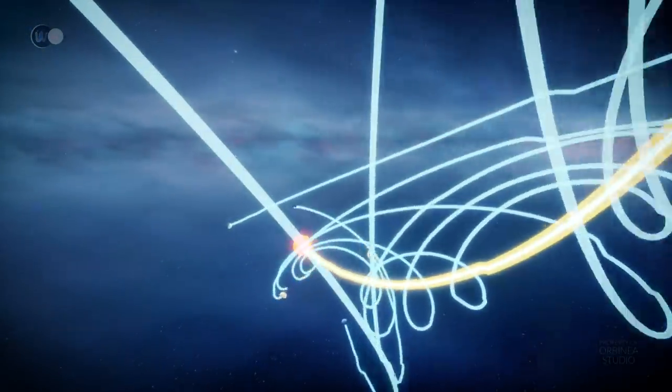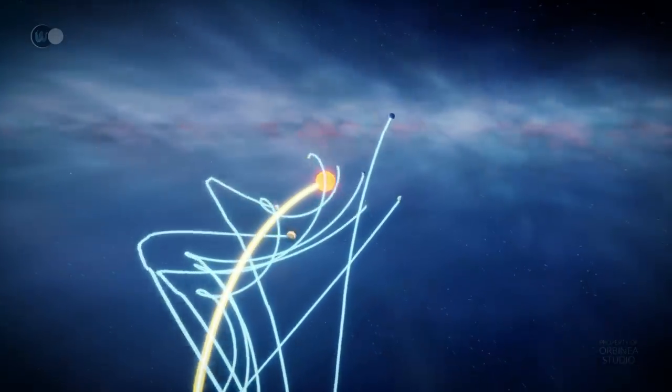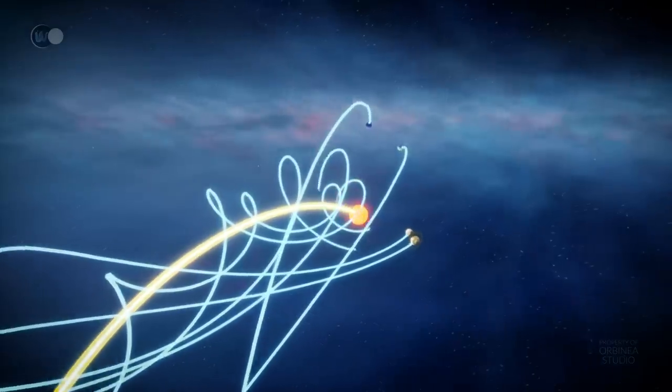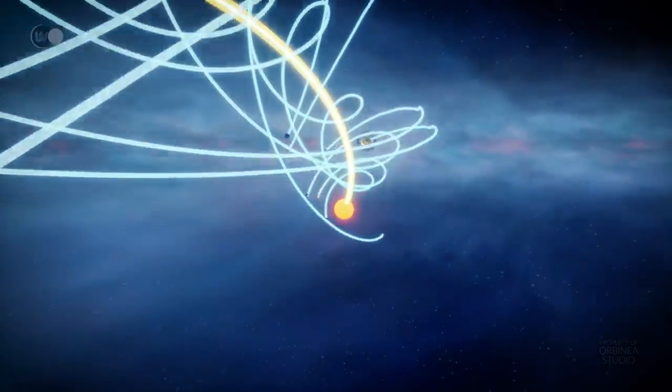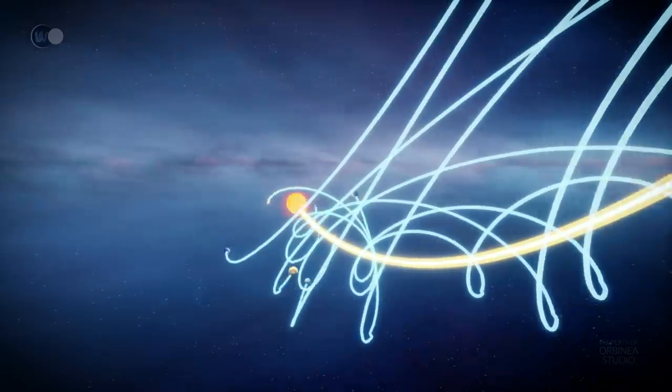But what's most surprising is that the Sun, in its never-ending path, doesn't draw a flat circle. In fact, as it moves through the galaxy, it rises and falls in a vertical motion across the galactic disk, drawing successive waves over periods of tens of millions of years.